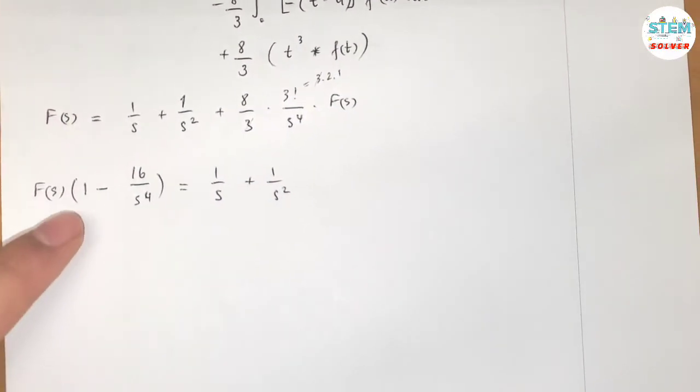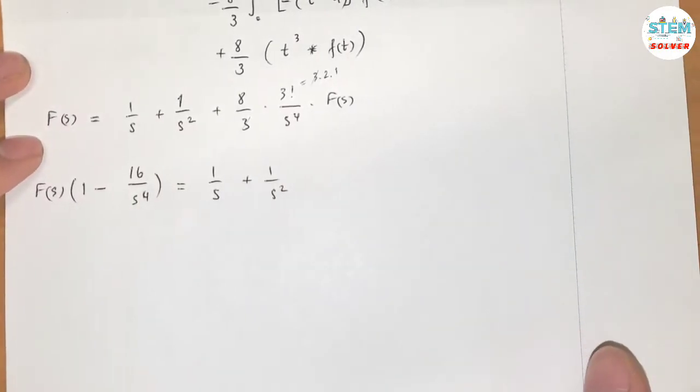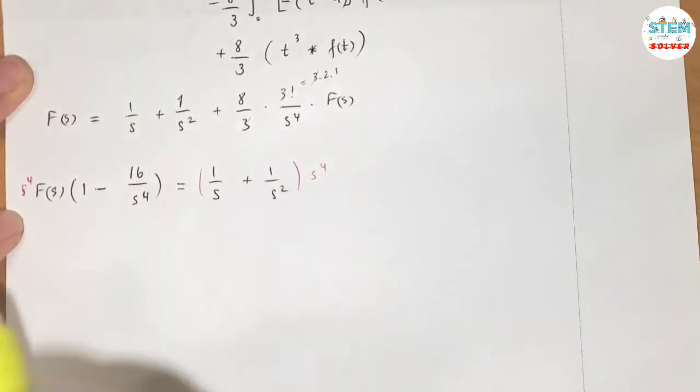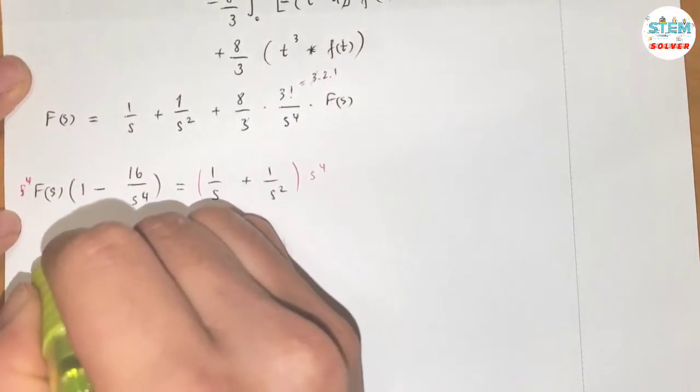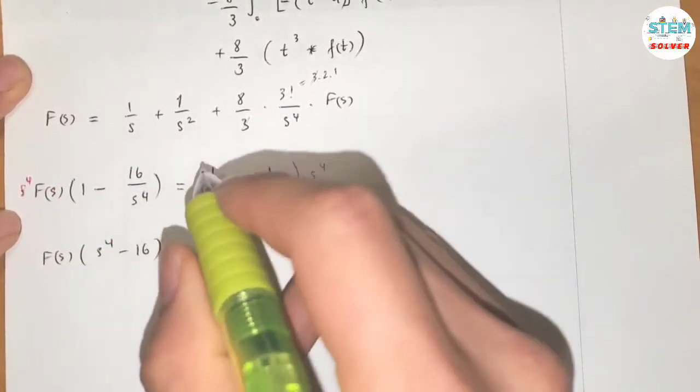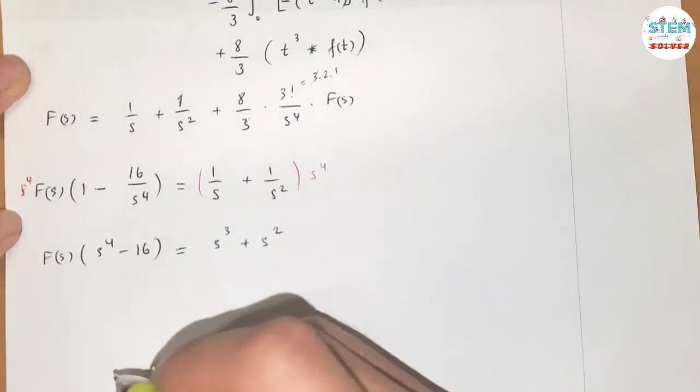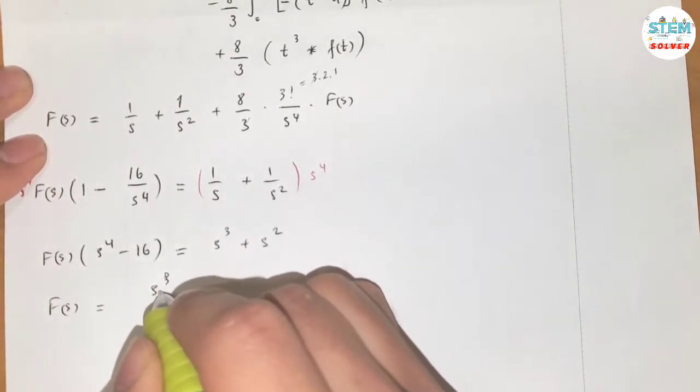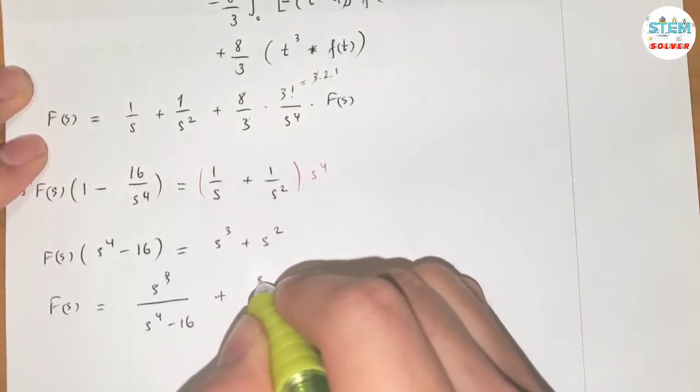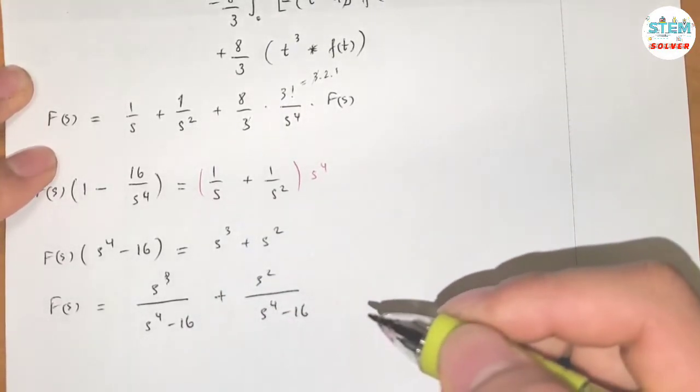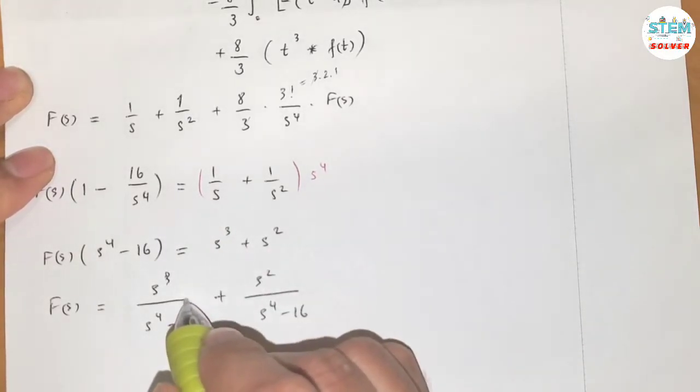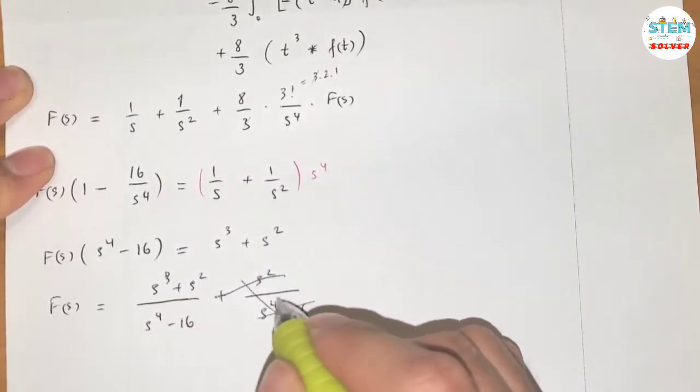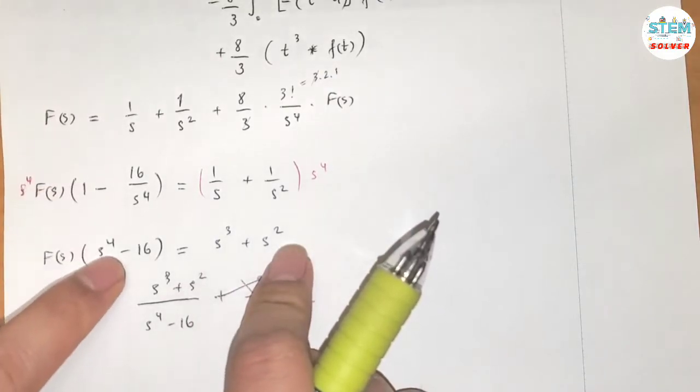Now as you see, we have fractions here, and again, I don't like to work with fractions. So what I'm going to do is multiply both sides by S to the 4th. Then I have capital F of S, S to the 4th minus 16 equals S cubed plus S squared. Now divide both sides by S to the 4th minus 16. So I have S cubed over S to the 4th minus 16 plus S squared over S to the 4th minus 16, or actually combine all of these together. Just S cubed plus S squared all over that.